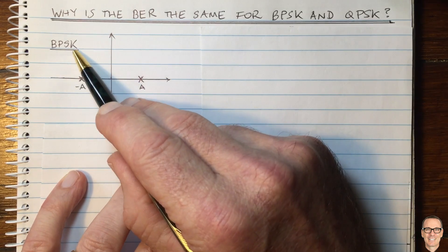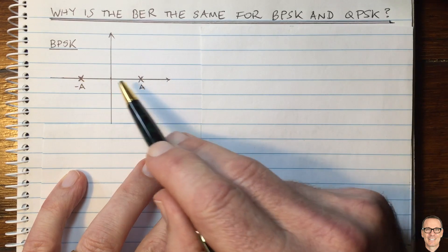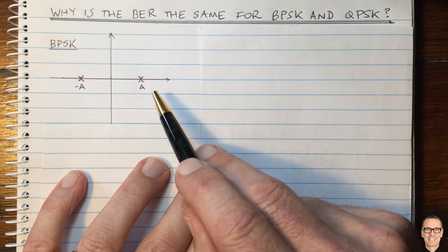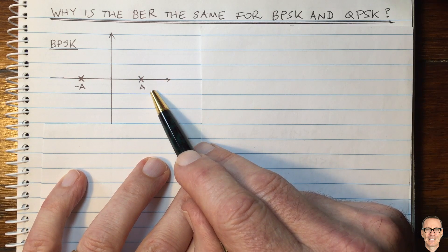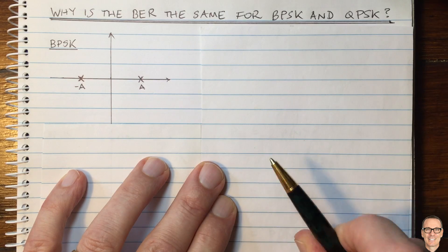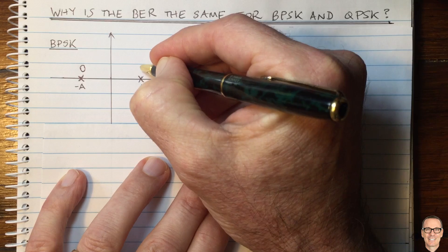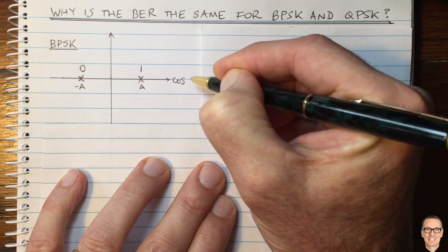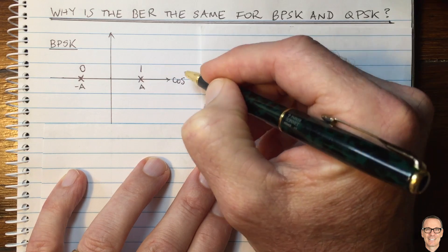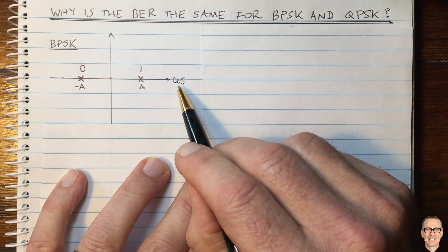Here we've got binary phase shift keying, and the constellation diagram shows two constellation points. Here we have one of these points representing a digital 0 and the other point representing a digital 1. This axis here is the cos axis, which means that you are modulating a cos waveform at the carrier frequency.